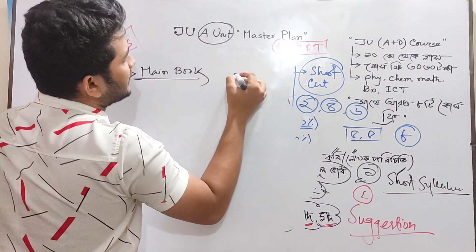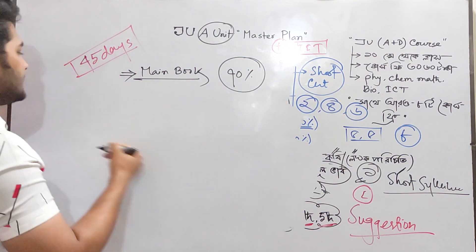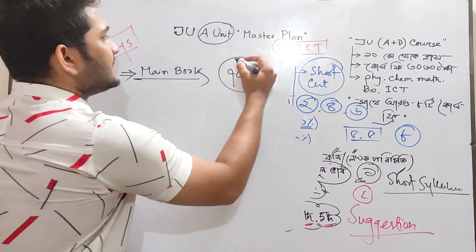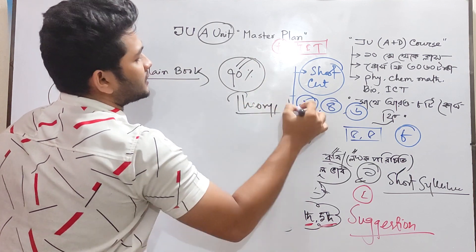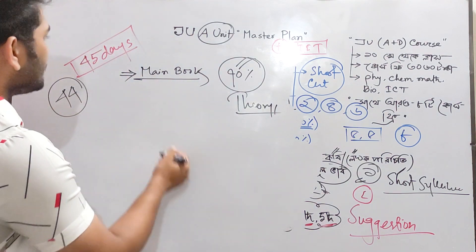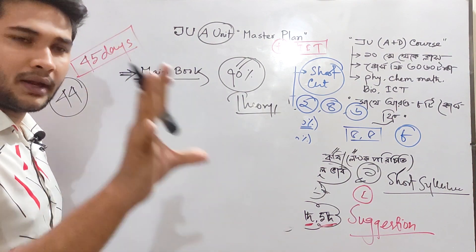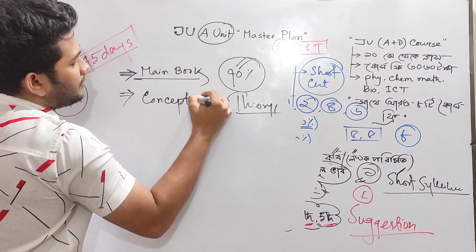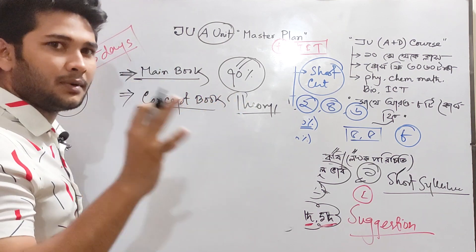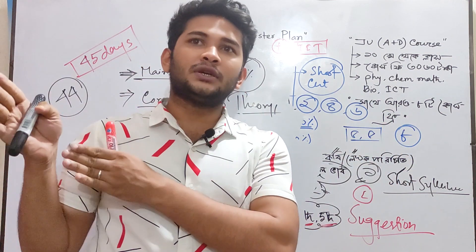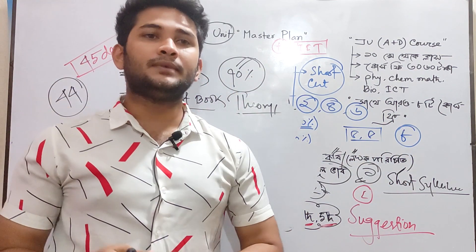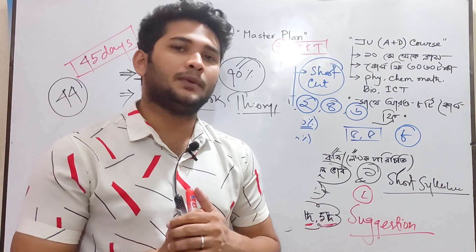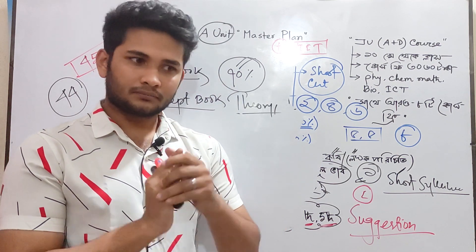The 70% question is theoretical. Physics and chemistry is the true list. The 70% question is the theoretical question. The main body is very good — we call it the concept book. We call it physics. It's easy to keep learning.